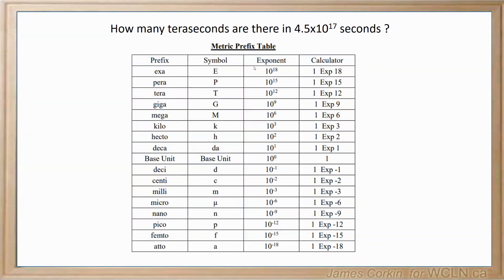So we first need to begin by looking up what tera means. Tera has a symbol of capital T and an exponent of 10 to the power of 12. This means that whatever our base unit is, there are 10 to the power of 12 of that unit in one tera unit.